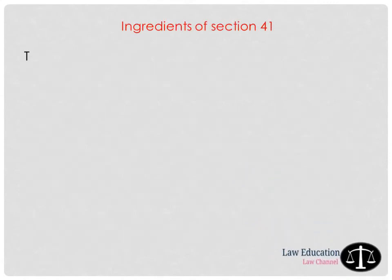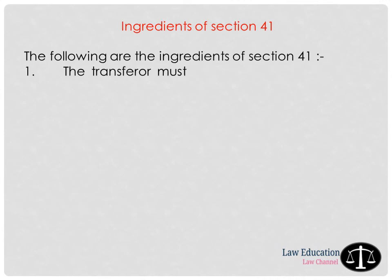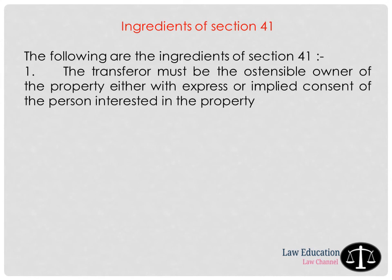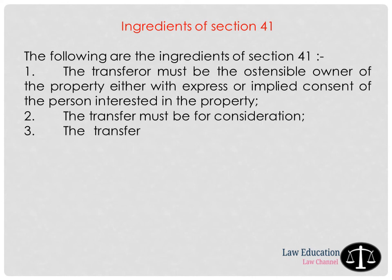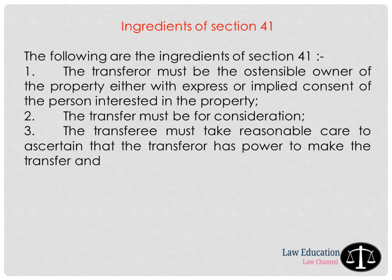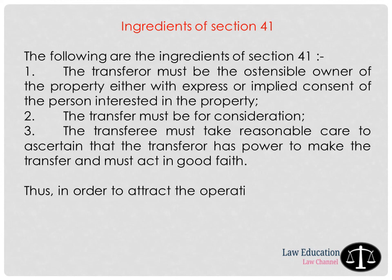Ingredients of section 41: number one, the transferor must be the ostensible owner of the property with the consent express or implied of the persons interested in the property; number two, the transfer must be for consideration; number three, the transferee must take reasonable care to ascertain that the transferor has power to make the transfer and must act in good faith. In order to attract the operation of section 41, the party relying upon the section must establish all these ingredients. If any one of these essentials is wanting, the transferee is not entitled to protection.